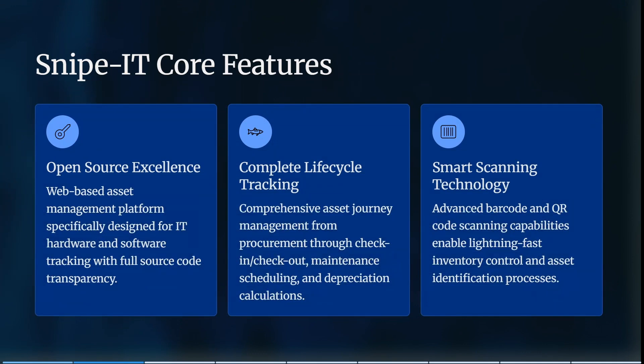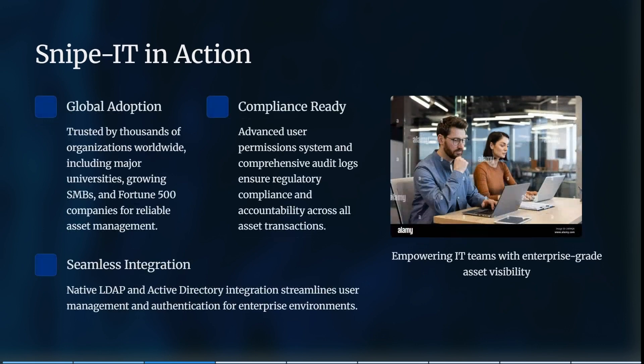Snipe-IT's core features include open source excellence — it's a web-based asset management platform specifically designed for IT hardware and software tracking with full source code transparency. It has comprehensive asset journey management from procurement through to check-in and check-out, maintenance scheduling, and depreciation calculations. It also has advanced barcode and QR code scanning capabilities enabling lightning-fast inventory controls and asset identification.